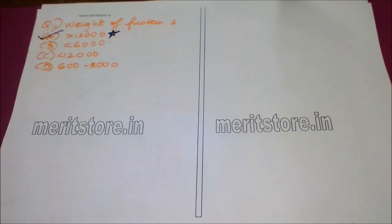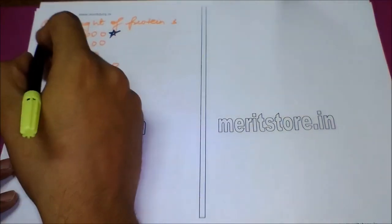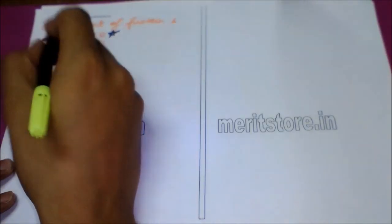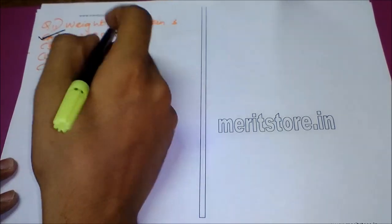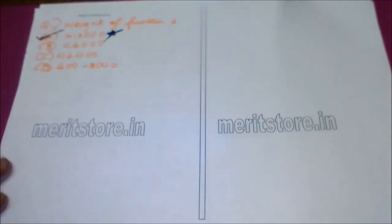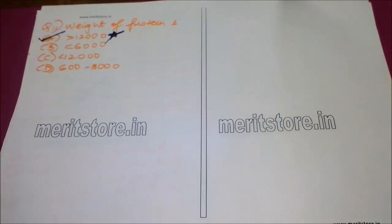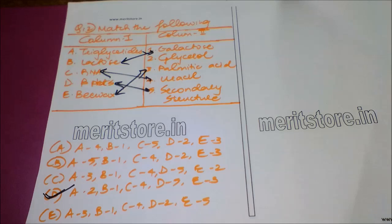The next question is: the molecular weight of protein is — Option A: above 12,000, Option B: below 6,000, Option C: below 12,000, and Option D: lies between 600 to 3,000. The answer is Option A: above 12,000, and it is important to remember this value.